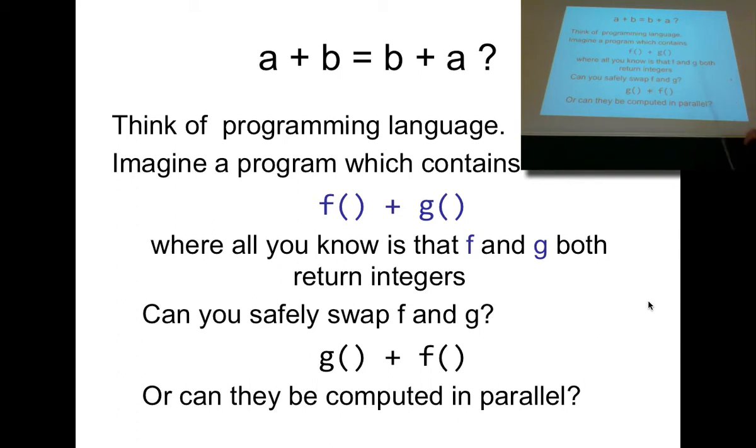And so what that means is we can't be sure that the behavior of F plus G will be the same as G plus F. Maybe that's not so surprising. Is that a bad thing? Well it could be a bad thing if, for example, we would like to evaluate this on one core and this on another in parallel and add the results together. We can't necessarily do that just by looking at the functions or at least looking at their types. We'd have to know about what side effects they might or might not have.